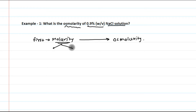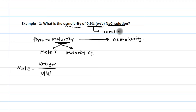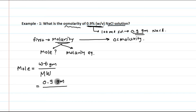To find molarity, we follow a two-step procedure: first find the number of moles, then apply the molarity equation. Moles = weight in grams ÷ molecular weight. The 0.9% w/v means 0.9 grams of sodium chloride in 100 mL of solution. So moles = 0.9 g ÷ 58.4 g/mol = 0.0154 moles.